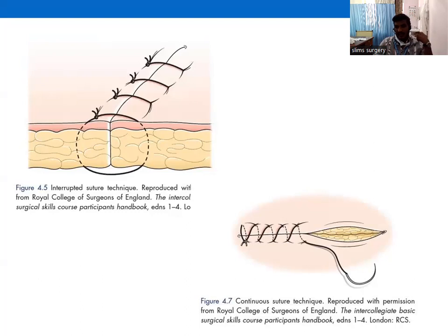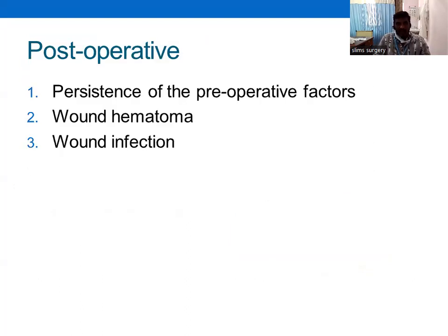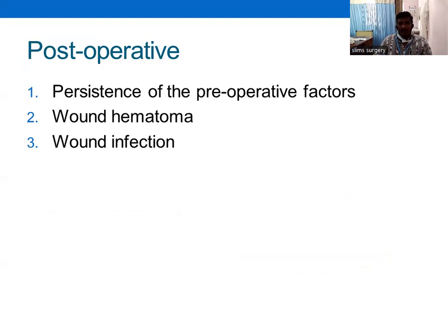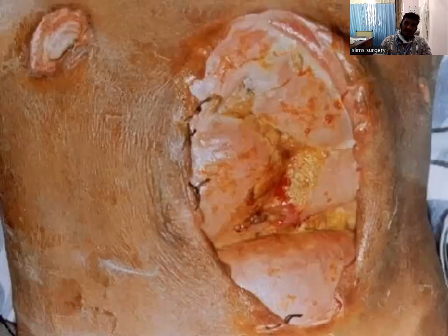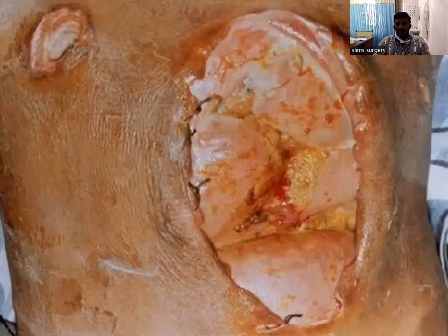Post-operative risk factors include persistence of pre-operative risk factors, wound haematoma from seroma production in the subcutaneous layer, and wound infection. Post-operative wound infection can disrupt the entire suture line and cause burst abdomen. In the picture shown, the intestine is clearly visible with no skin or covering layers above it, demonstrating burst abdomen.